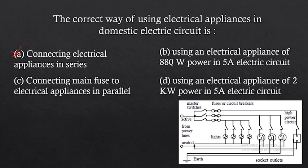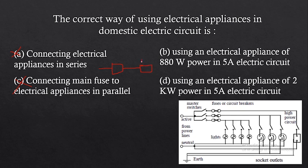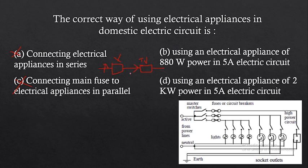Option C — connecting the main fuse to electrical appliances in parallel — is wrong. The fuse must always be connected in series with the electrical appliances. If there is a sudden rise in current or voltage, the fuse will break and stop the current supply to the appliances immediately, protecting them from damage. Therefore the fuse must be in series, not in parallel.